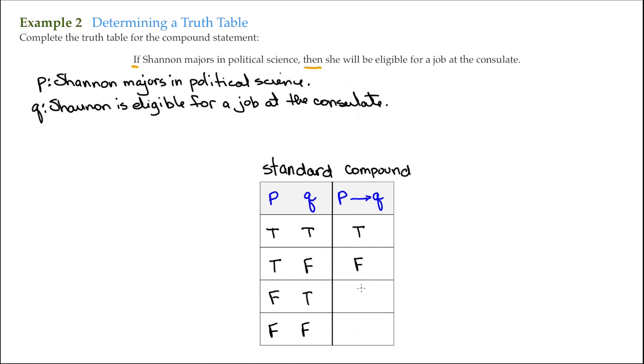Other than that, it's true. So this is the truth table for the compound statement. If Shannon majors in political science, then she will be eligible for a job at the consulate.